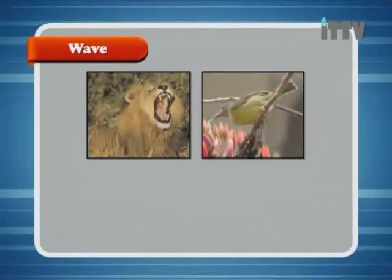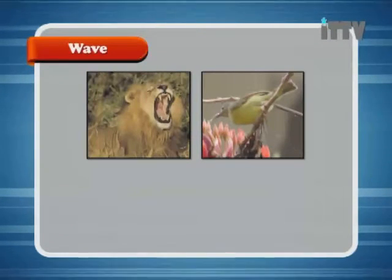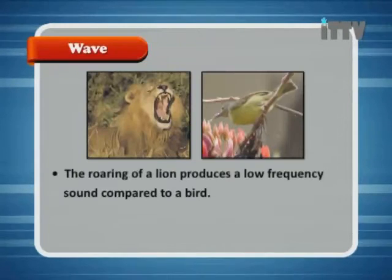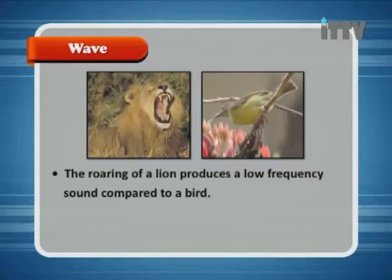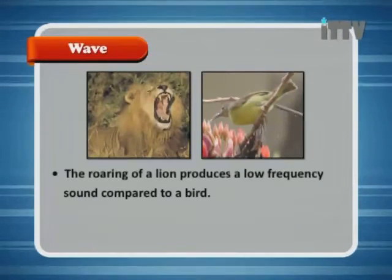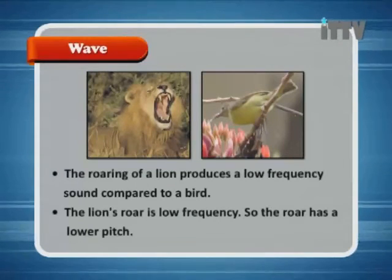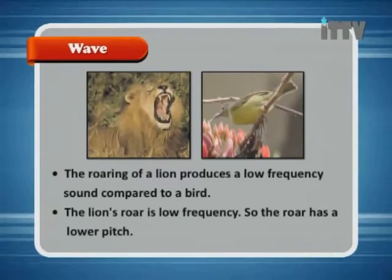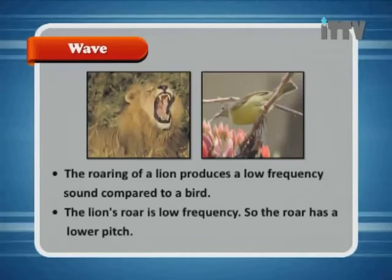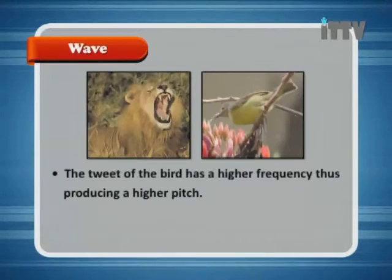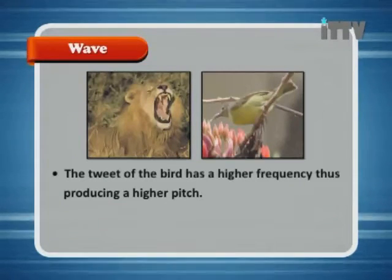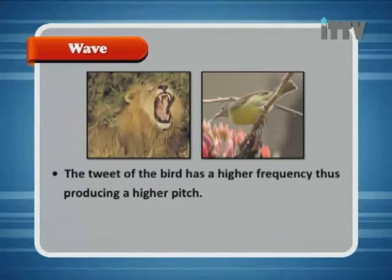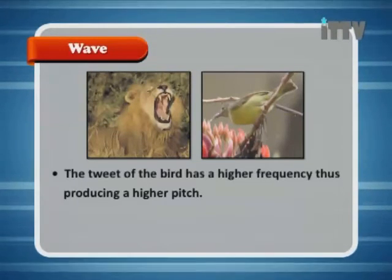In the diagram, we see a lion and a bird. The roaring of a lion produces a low frequency sound compared to a bird. The lion's roar is low frequency, so the roar has a lower pitch. The tweet of the bird has a higher frequency, thus producing a higher pitch.